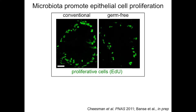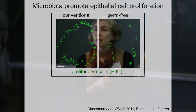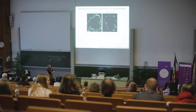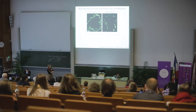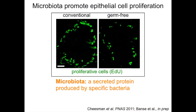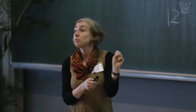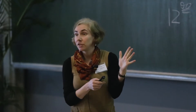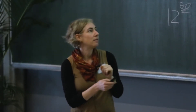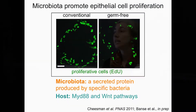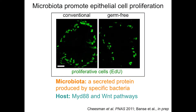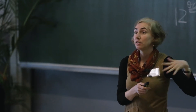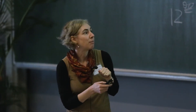We've also shown that in the germ-free state, the renewal of the intestinal epithelium is reduced — there are fewer proliferating cells within the intestinal epithelium of germ-free versus conventional animals. In this case, we've actually been able to identify a particular secreted protein made by certain bacterial members of the community that is sufficient to upregulate cell proliferation. And that's working through MyD88 and Wnt signaling pathways, feeding into pathways that are well known to be involved in cell proliferation in epithelium.